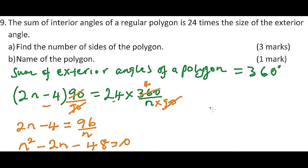When you factorize, you get (n + 6) and (n - 8) equals to 0.